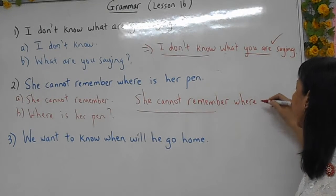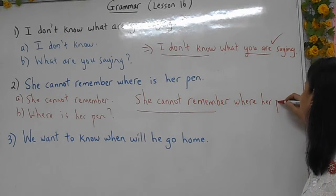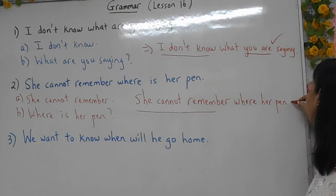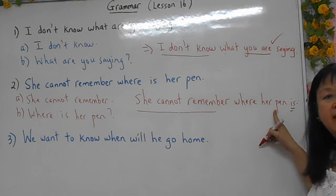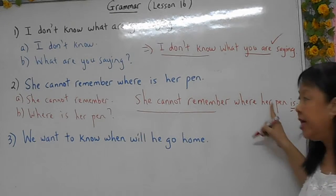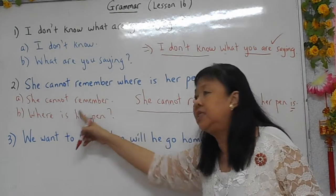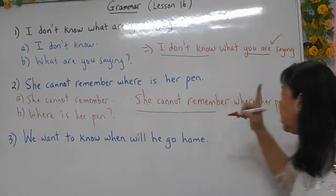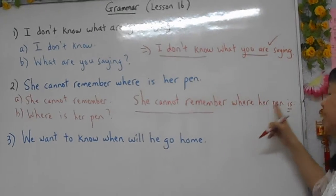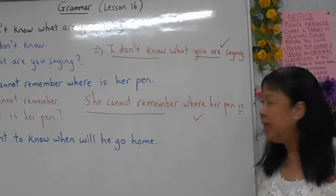So it's the same as before. 'Where' — and then 'her bank.' The 'is' comes behind 'her bank.' If it is a question, it's 'is her bank.' But if it is a statement, it's 'her bank is.' So this is the correct answer.